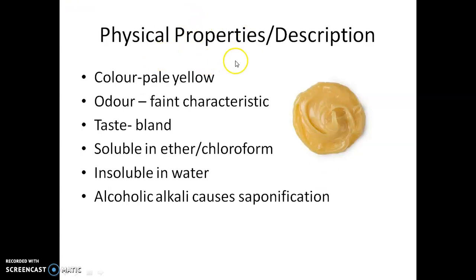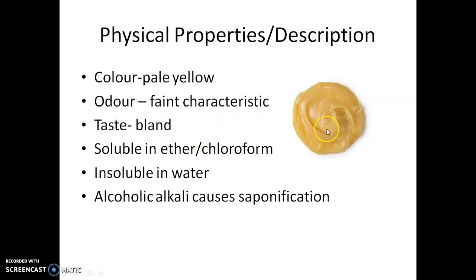Let us look at the physical properties of Ulfat. This is the image of Ulfat. The color is pale yellow, the odor is faint and characteristic, and the taste is bland. It is insoluble in water but soluble in ether and chloroform. Alcoholic alkali can cause the saponification of Ulfat.